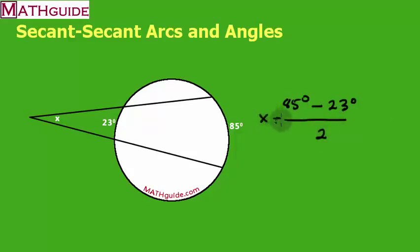When I do that, I'm going to get angle X. Let's subtract. So 85 minus 23 is going to be 62 degrees, which I have to divide by 2, and 62 divided by 2 is 31 degrees. Therefore, angle X is 31 degrees. That's all there is to it.